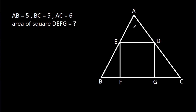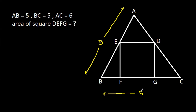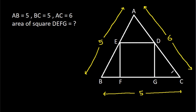In this video, we have been given that AB is 5, BC is 5, and AC is 6. We have to find the area of square DEFG.